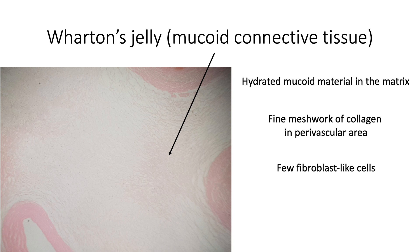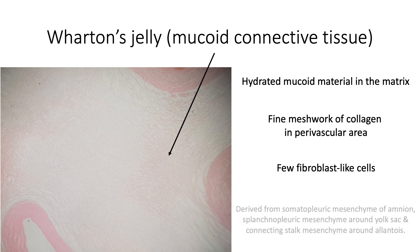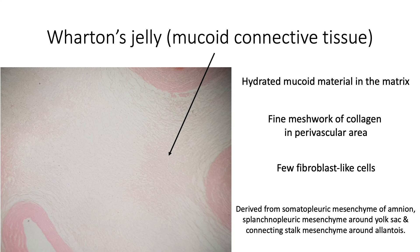Wharton's jelly is derived from the somatopleuric mesenchyme of the amnion, the splanchnopleuric mesenchyme around the yolk sac, and the unsplit connecting stalk mesenchyme around the allantois.